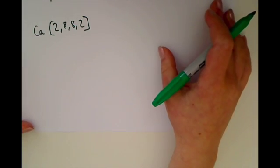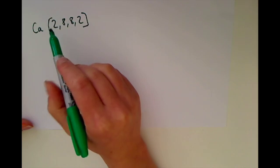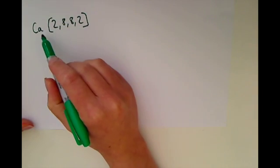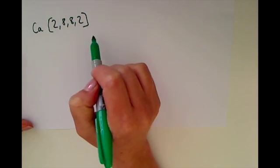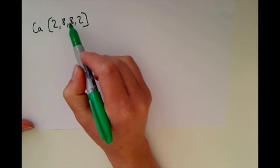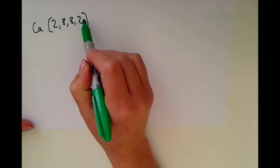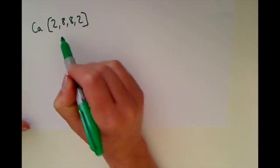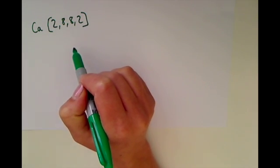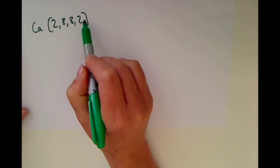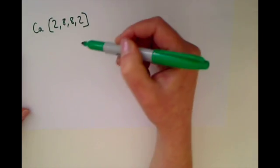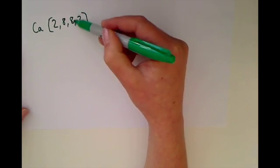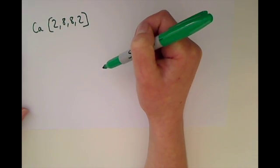You should also be able to recognize the electron structure of atoms in a number form. For example, calcium would be written as 2, 8, 8, 2 — representing the number of electrons in each of its energy levels: two in the first shell, then eight, then eight, then two. You should be able to draw an atom given its electron configuration, recognize which atom it is, and tell that it has, for example, two electrons in the outer shell and therefore is found in group two.